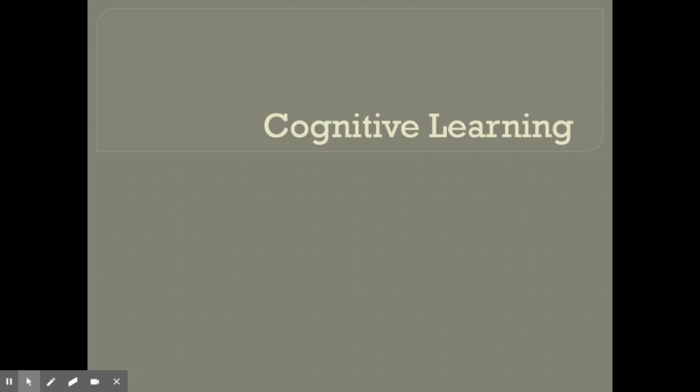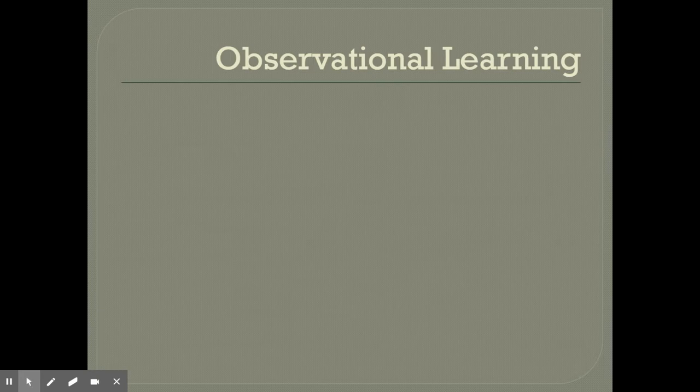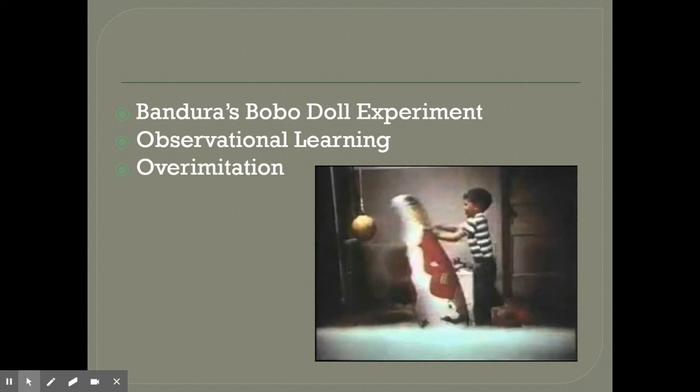This is the lecture on cognitive learning given on Thursday, March 11th. With cognitive learning, we first talk about observational learning — learning that involves thinking. One of the first experiments ever done to really demonstrate that cognitive learning takes place was done at Stanford in the 1960s with a psychologist named Albert Bandura. He had a group of children play in a playroom.